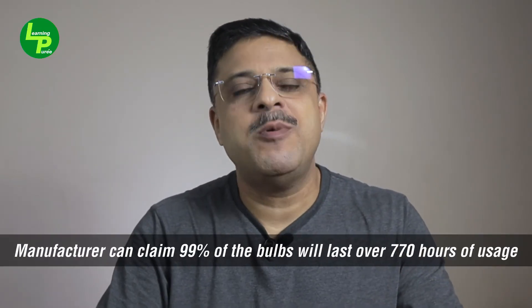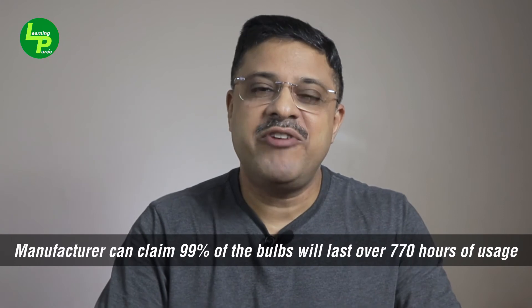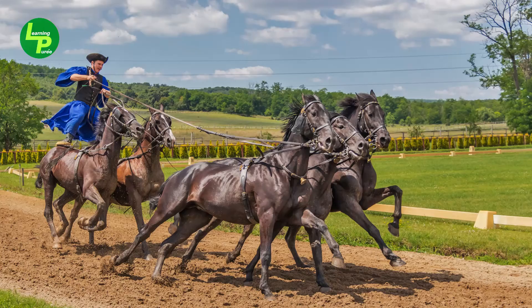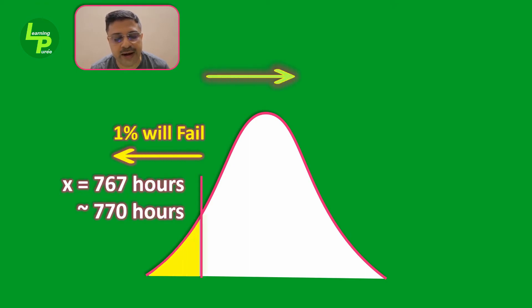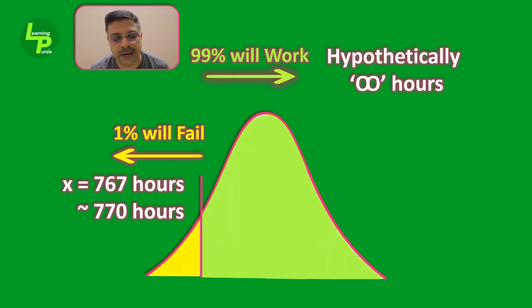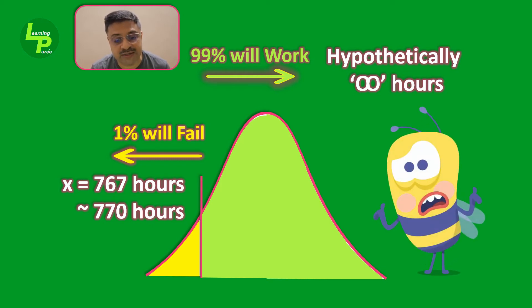We did a great job of resolving all the issues raised by Bling Lights — but hold on. Let's look at the last question once again. Though we have capped the lifespan hours boundary at the lower end, we have not done so at the upper end. It effectively means that some of the 99% of the bulbs could statistically have an infinite lifespan. This will definitely cause warranty and legal issues for the manufacturer, and we don't want that to happen to our client.